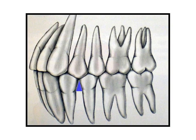Correct embrasure form is necessary for gingival health and cleanseability. Below the contact, the proximal surfaces tend to be concave or flat. Note the triangular shape of the posterior embrasure space. It is critical to gingival health to maintain space for the dental papilla.